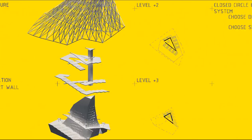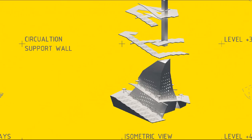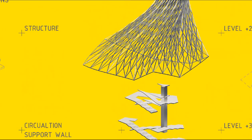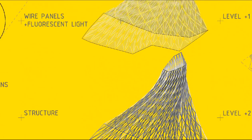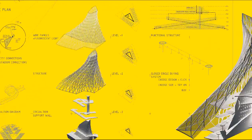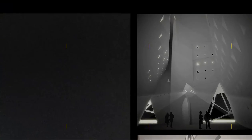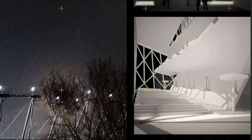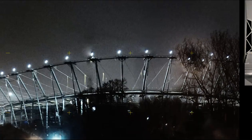On the isometric view we can see that every object is a system of supporting wall, circulation, structure for panels, and wire panels with fluorescent light. We can see how it looks on the interior visualization of the audio-visual hall, visualization of the fan store, and finally visualization of the object illumination during night.